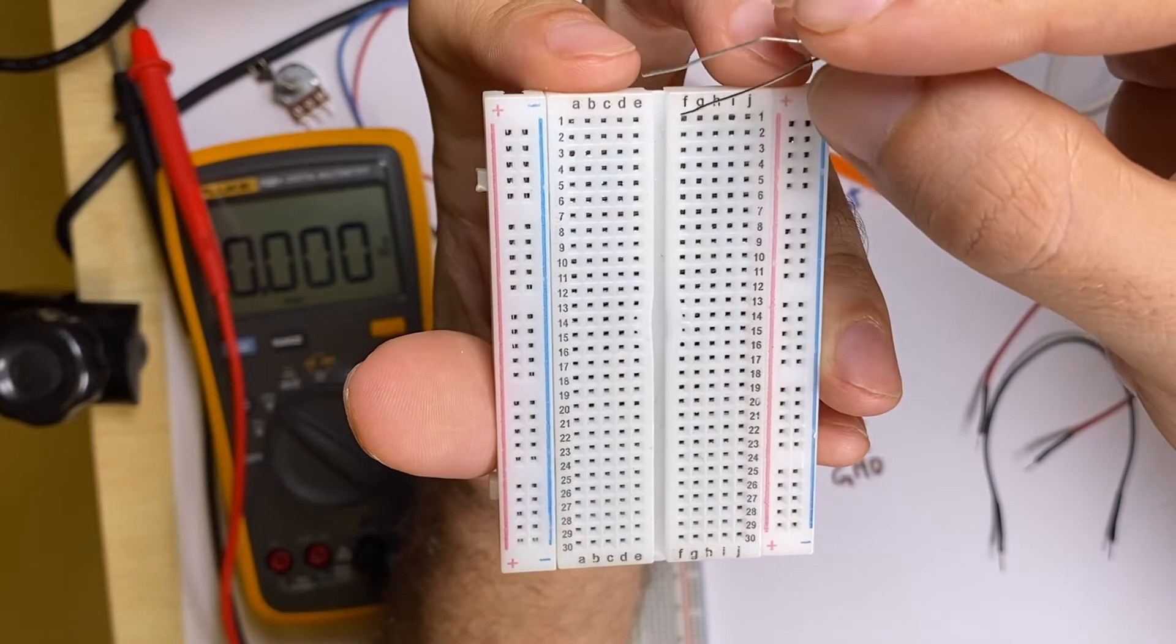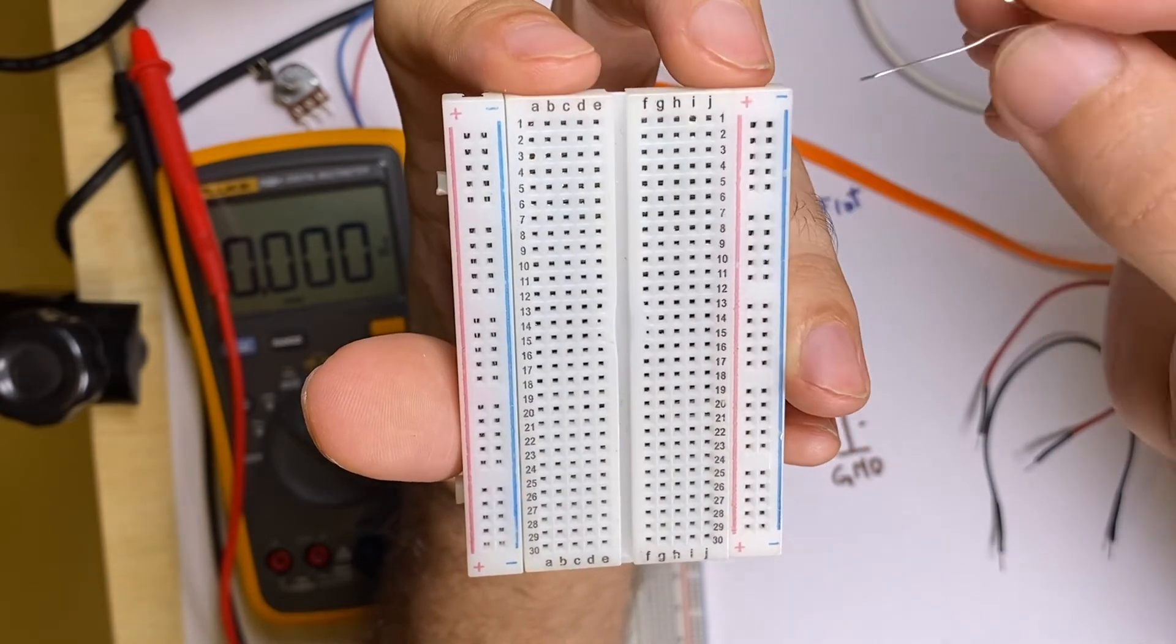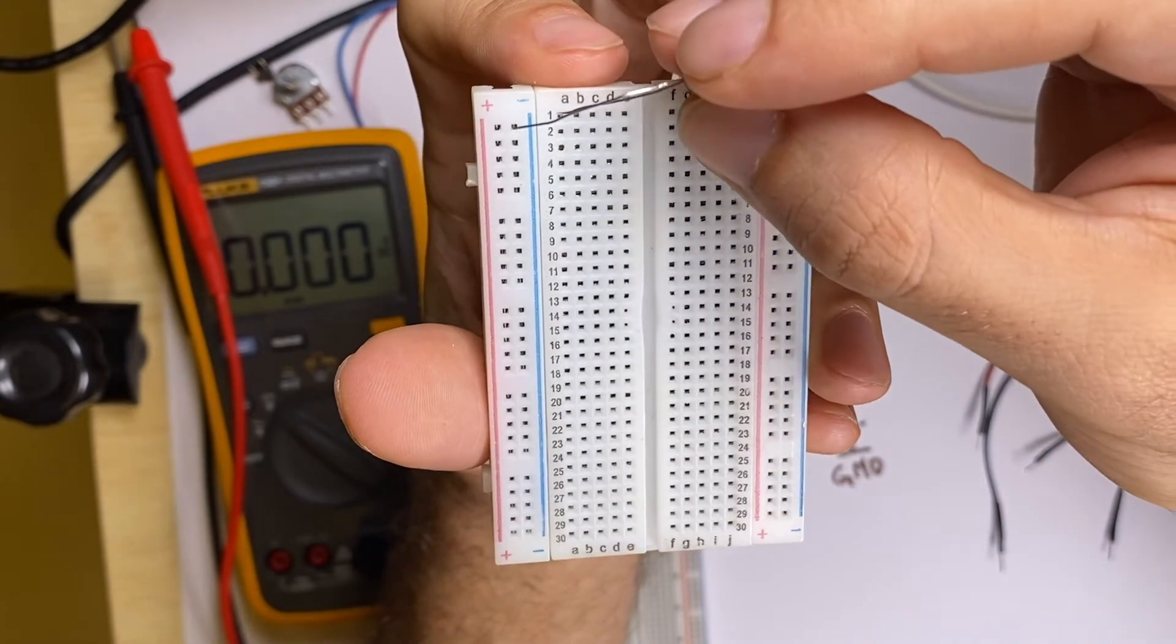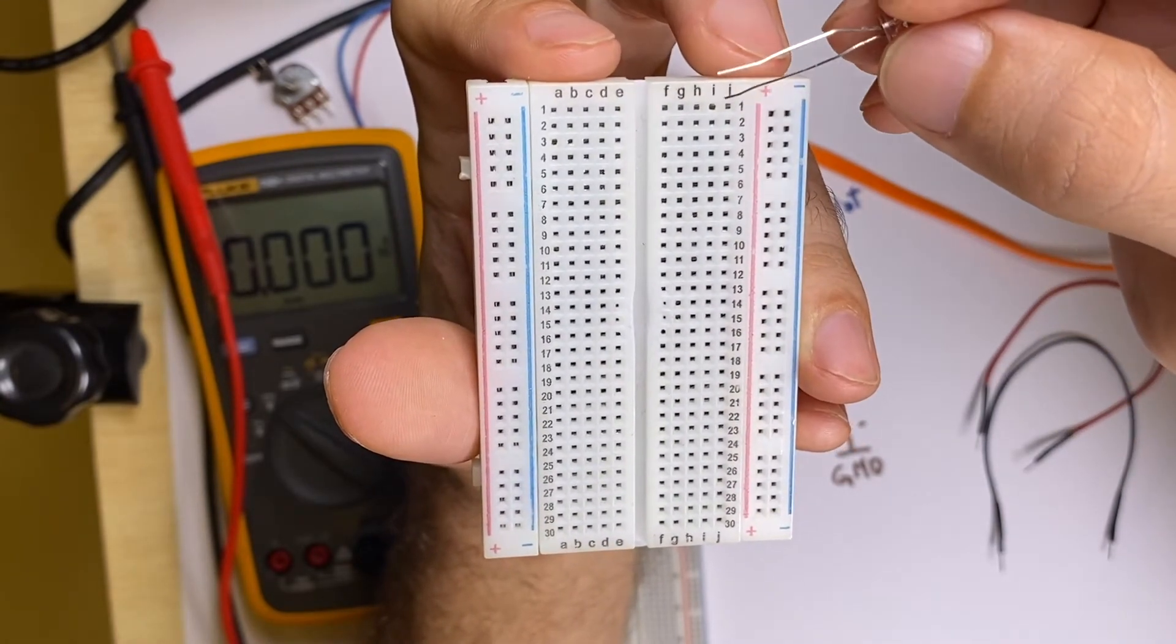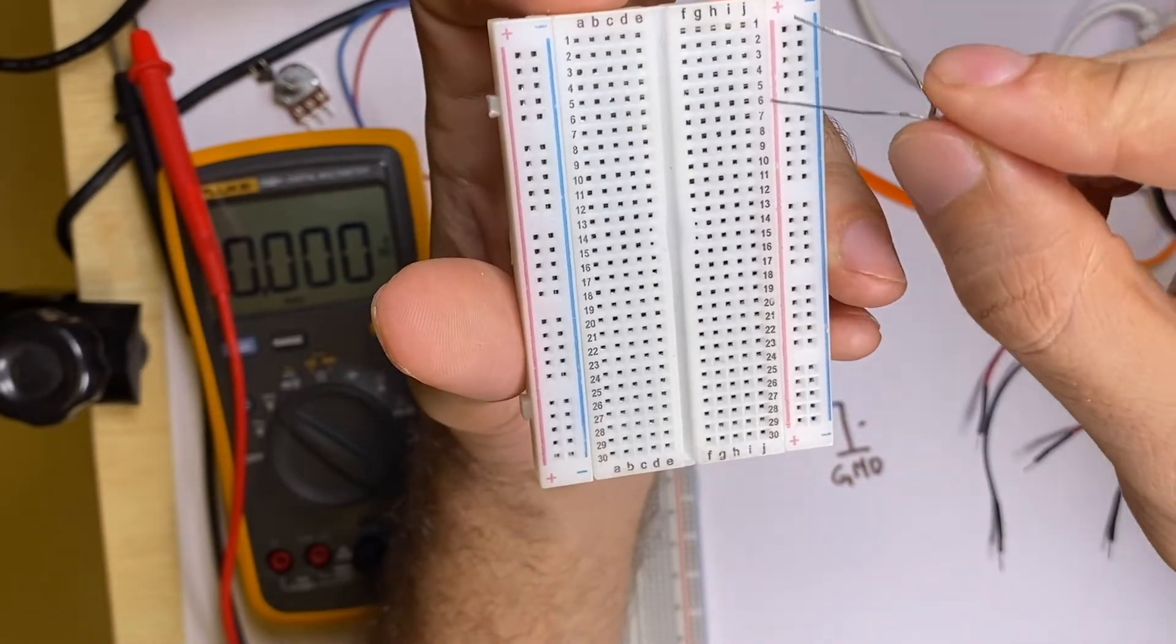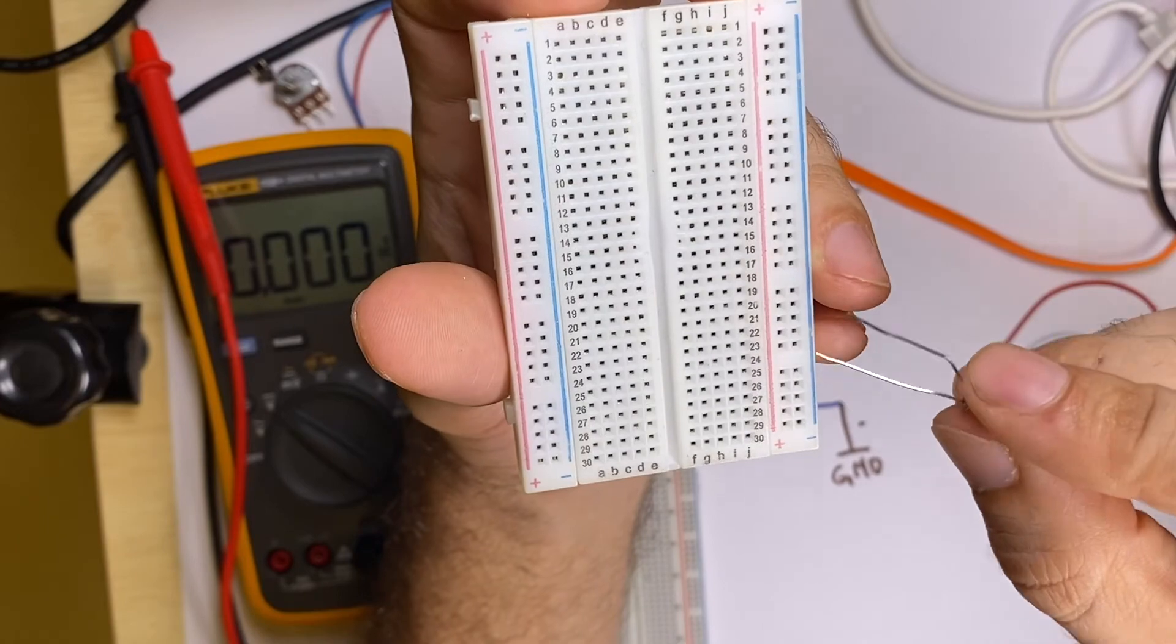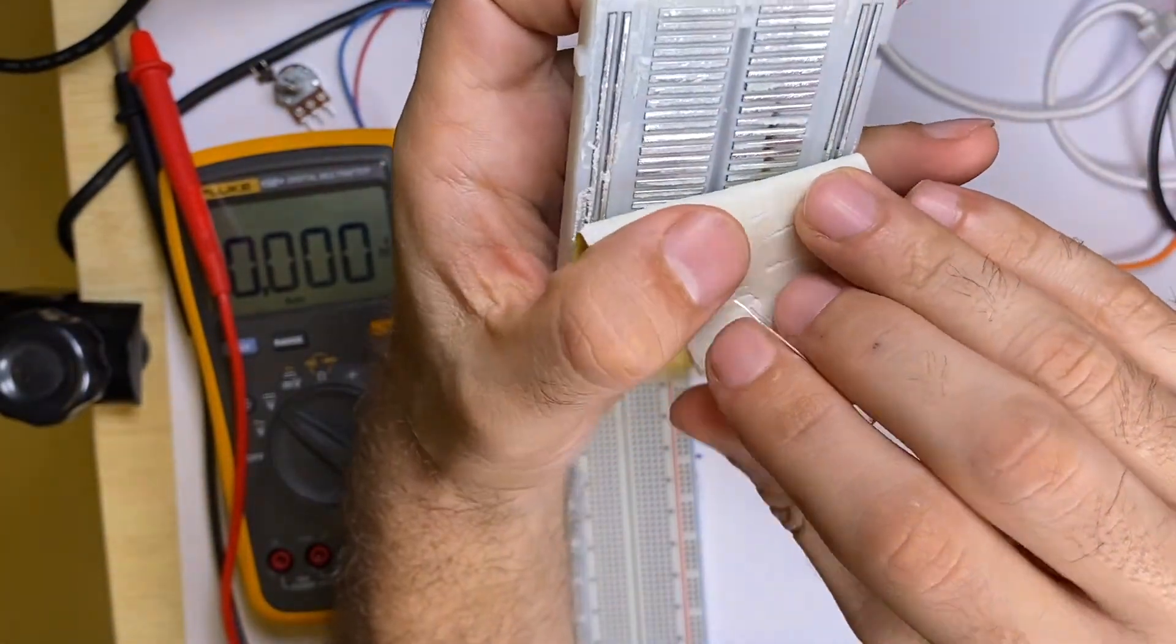For that we will use the breadboard. You'll notice that in the main part of the breadboard, A to E are all together. There's a gap, and then F to J are all together again. That means they are electrically connected. Also on the sides there are red and blue power rails.